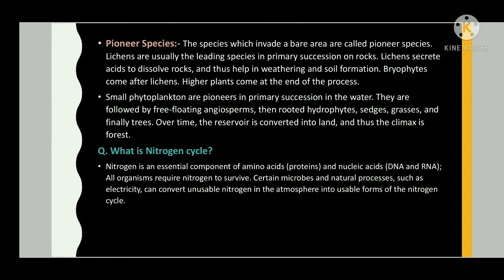Lichens are usually the leading species in primary succession on rocks. Lichens secrete acids to dissolve rocks and thus help in weathering and soil formation. Bryophytes come after lichens; higher plants come at the end of the process. Small phytoplankton are pioneers in primary succession in water, followed by free-floating angiosperms, then rooted hydrophytes, sedges, grasses, and finally trees. Over time the reservoir is converted into land, forming a climax forest.